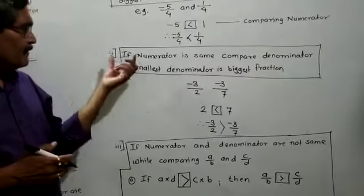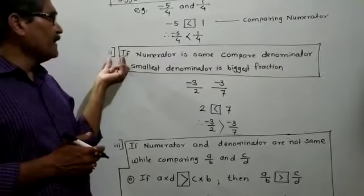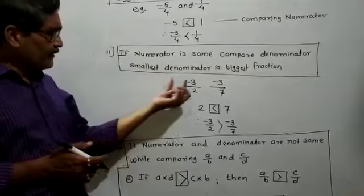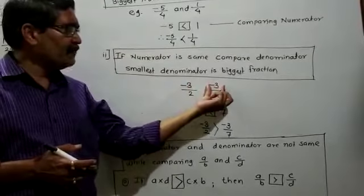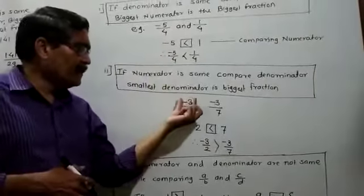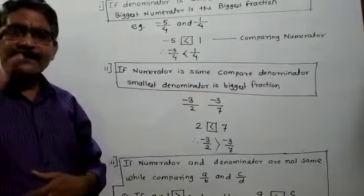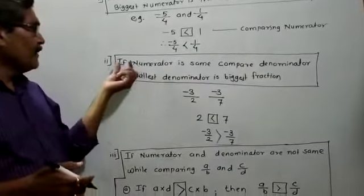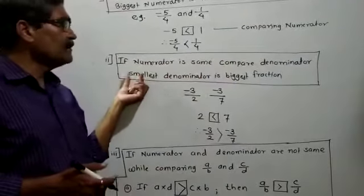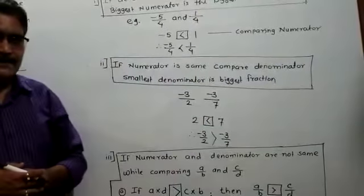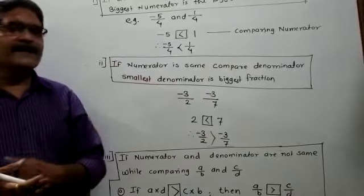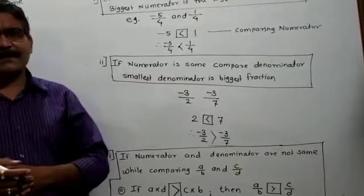The other rule is: if the numerator is the same — here the numerator is -3 and here the numerator is also -3 — at that time compare the denominator. The smallest denominator is the biggest fraction. If you compare the denominators, the smallest denominator is the biggest fraction.